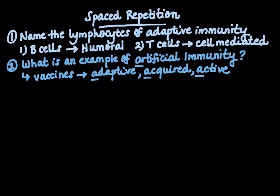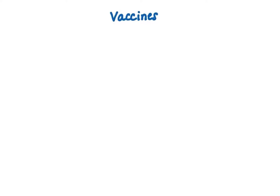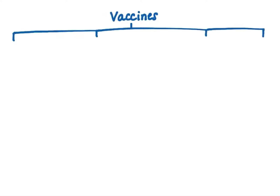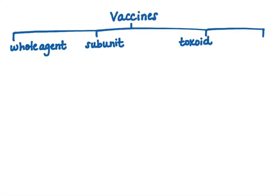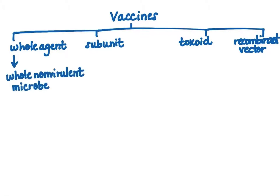So, what is a vaccine? A vaccine is a suspension of a given microbe designed to mount a specific antibody response against a future pathogen exposure. Vaccines can be further subclassified into four broad categories: one, whole agent vaccines; two, subunit vaccines (also known as conjugate vaccines); three, toxoid vaccines; and four, newer experimental vaccines known as recombinant vector vaccines.